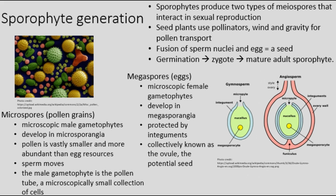When a pollen grain reaches an egg, it develops into a male gametophyte, which is a pollen tube that delivers sperm nuclei to the egg. The male gametophyte is the pollen tube — a microscopically small collection of cells. The fusion of sperm nuclei and egg constitutes a seed: a neat little packet of shelter, the embryo sporophyte, and food stores for the future offspring, which will develop when environmental conditions are right. When germination occurs, the zygote develops into a mature adult sporophyte.